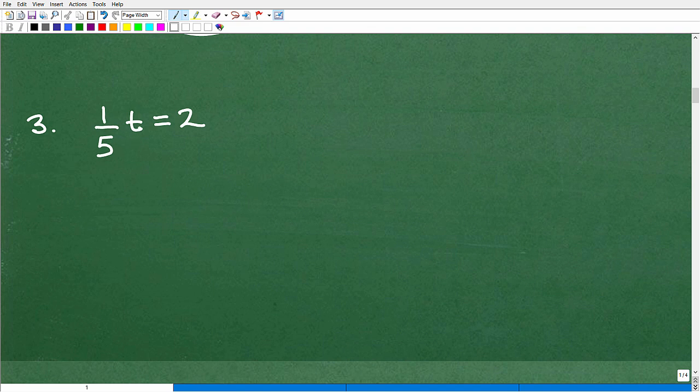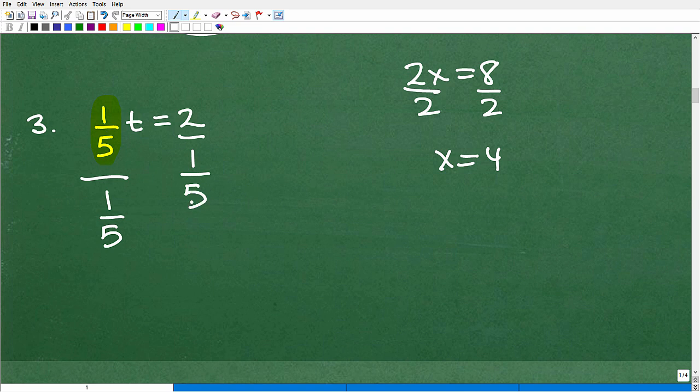I have 1/5 t is equal to 2. So you can look at this a couple different ways. I have 1/5 times t is equal to 2. So you're saying, well, when the number is being multiplied by a variable like 2x is equal to 8, what we did here was what? We divided both sides of the equation by 2 so we can get x by itself. So you could, in fact, look at this equation and do the same thing. I'm like, okay, how about we just divide both sides of the equation by 1/5, okay? And you could do that, right?